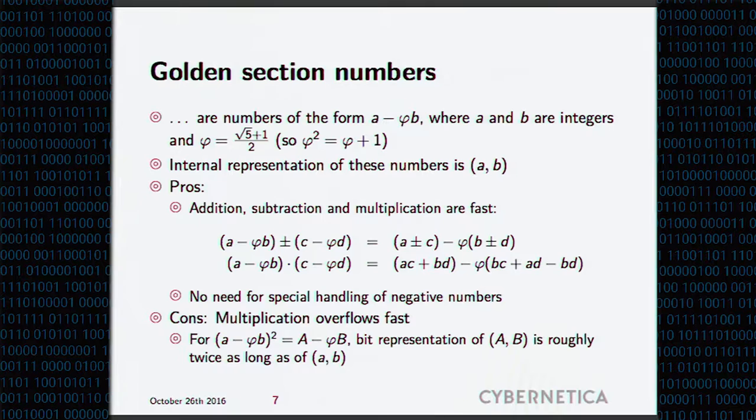What are the good sides of this representation? Addition and subtractions are basically local operations. If you're talking about multi-party computations, you just add the components of the representation, and you get your representation for the sum. Multiplication is a little bit more complex. If you take two numbers in this form, you do the elementary math, you use representation of Phi squared, you get this sort of representation, which means to multiply two golden section numbers, you need to perform five multiplications in your basic data domain.